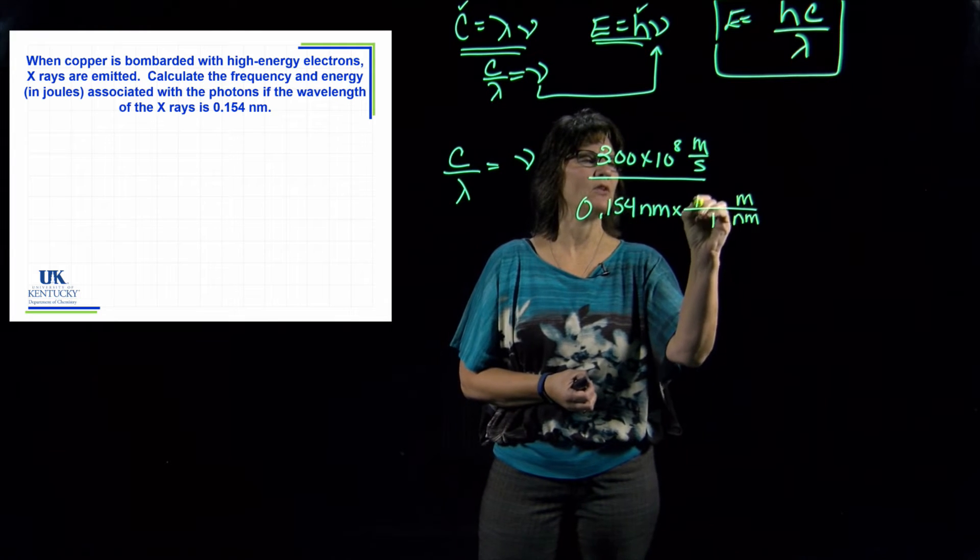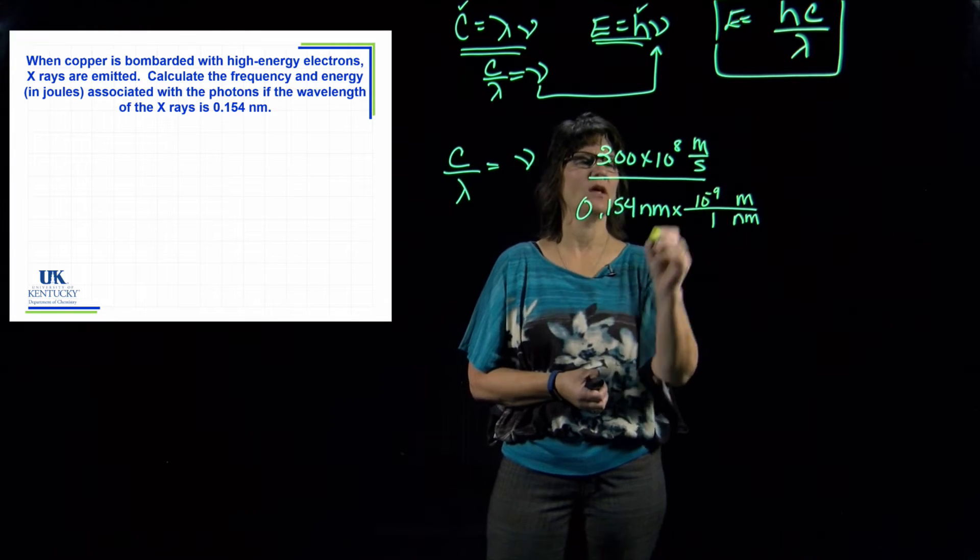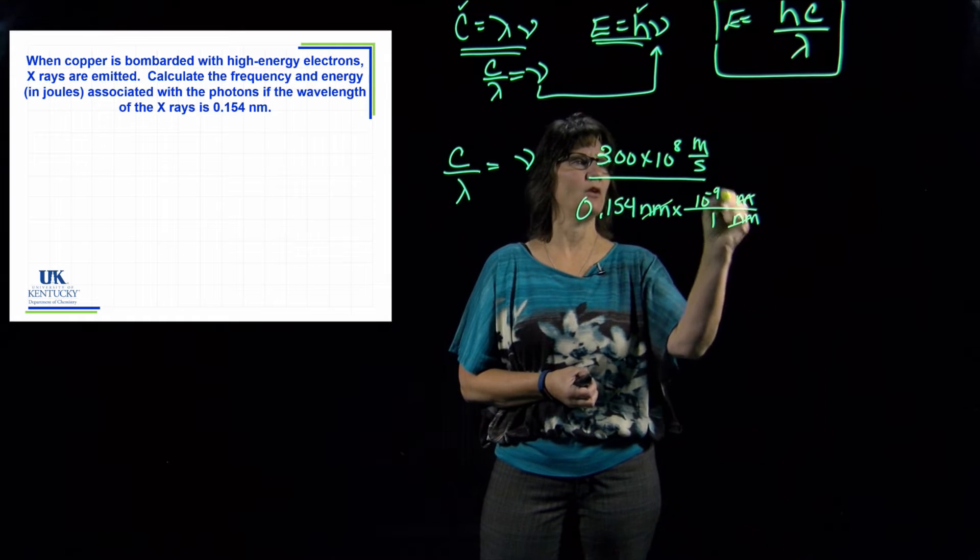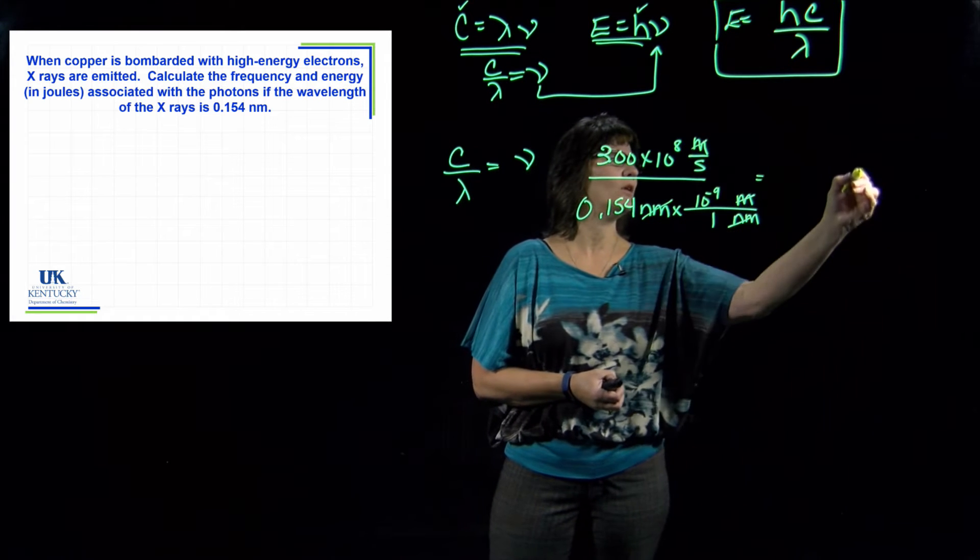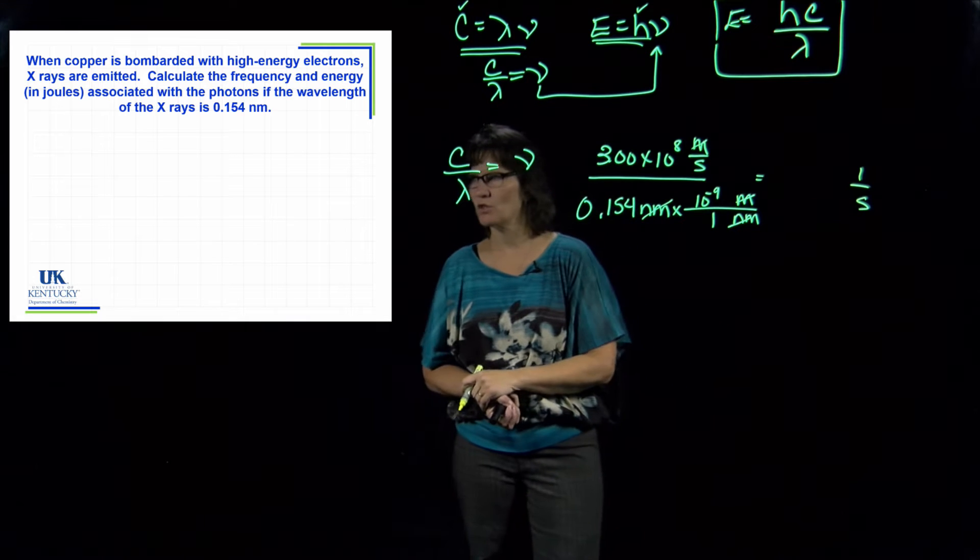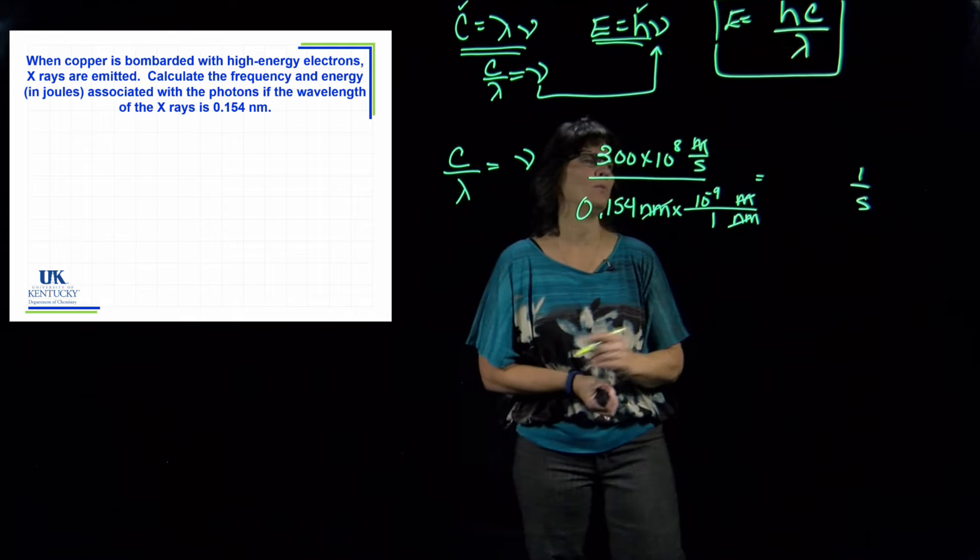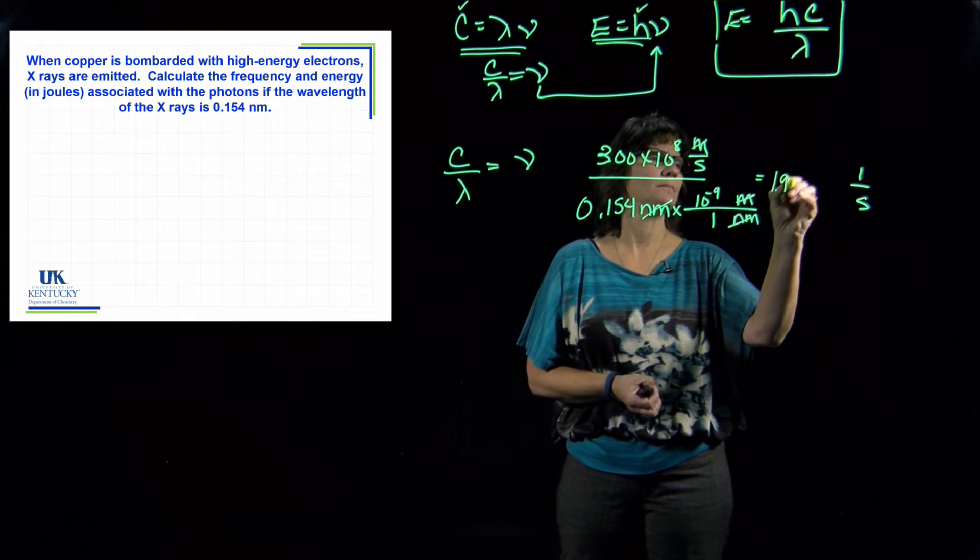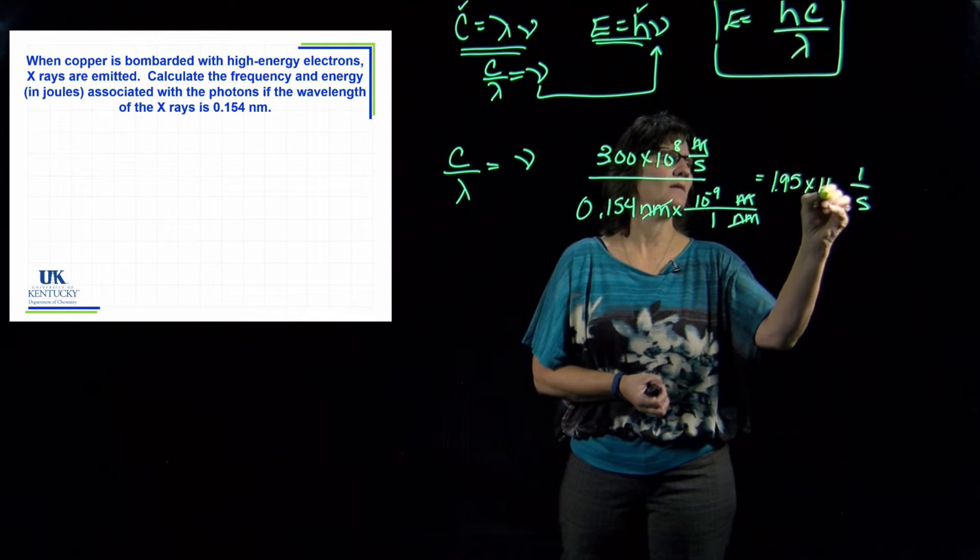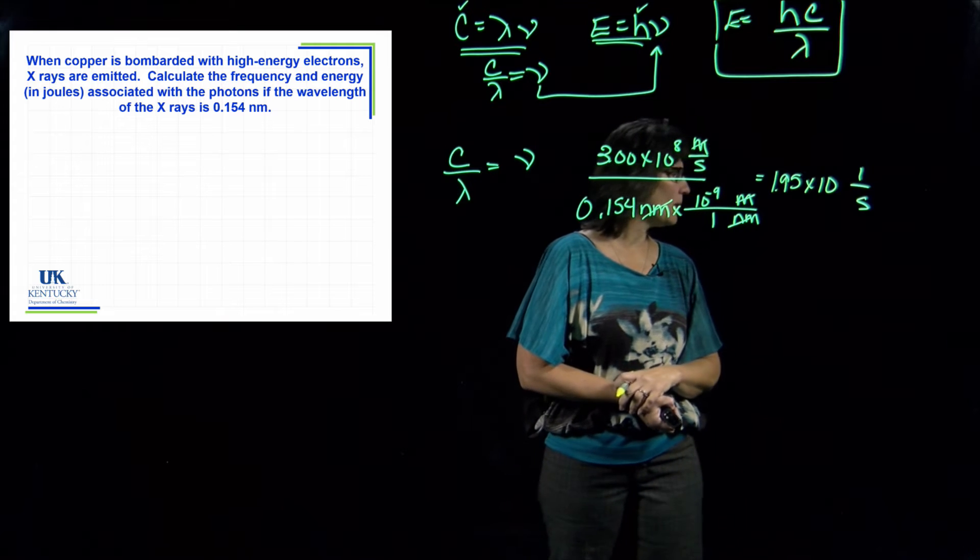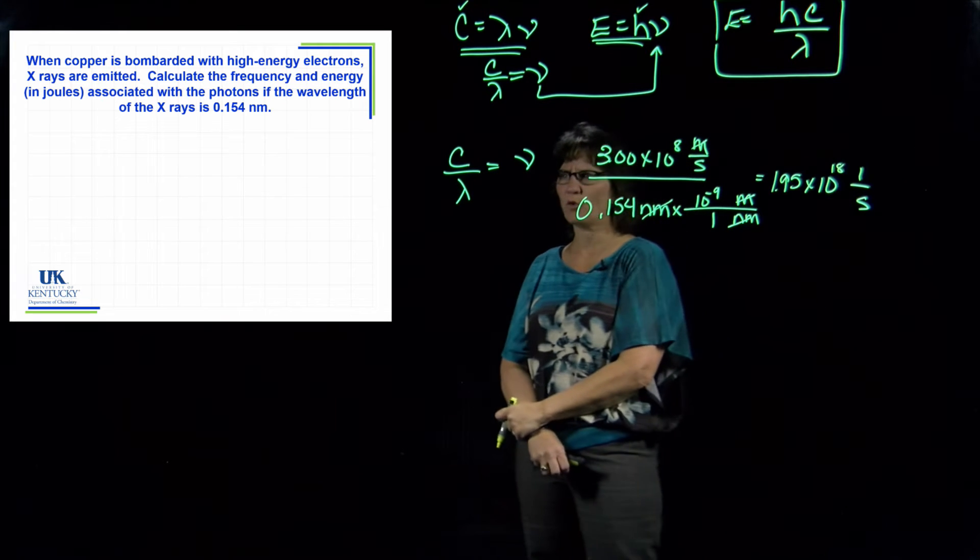Now these won't cancel, so I have to convert my nanometers to meters. One nanometer is 10 to the minus nine meters. My nanometers will cancel, my meters will cancel, I will be left with the unit of one over seconds, which is what I want for frequency. The value for this number is 1.95 times 10 to the 18th.